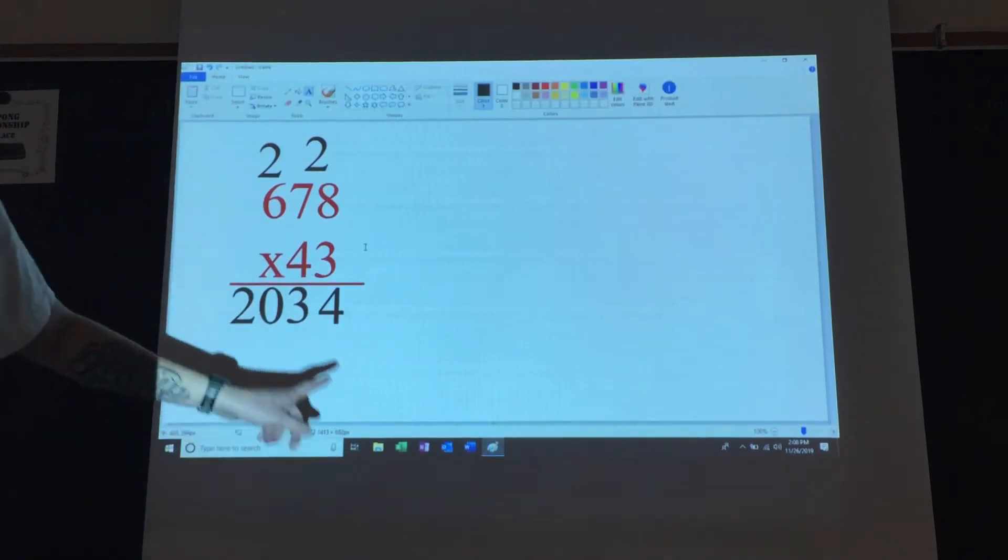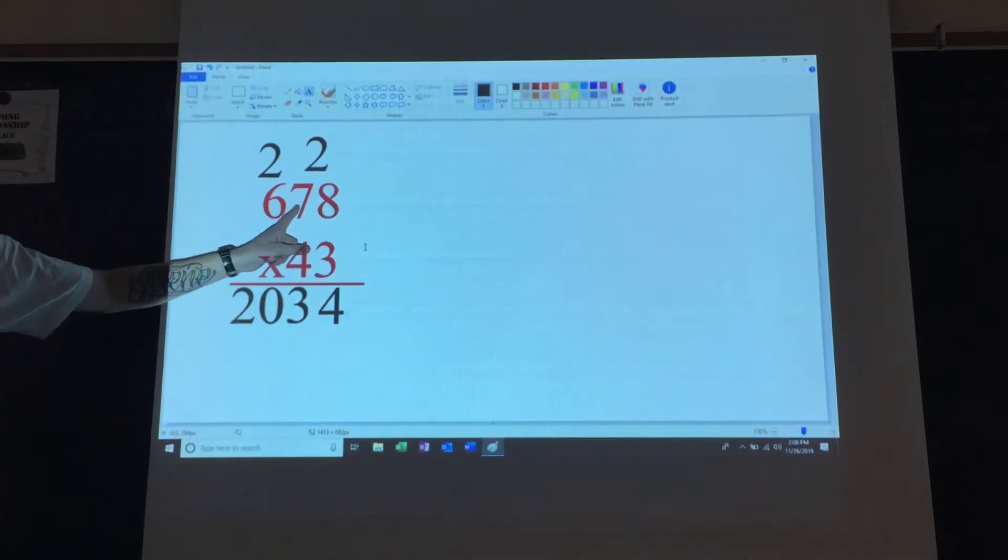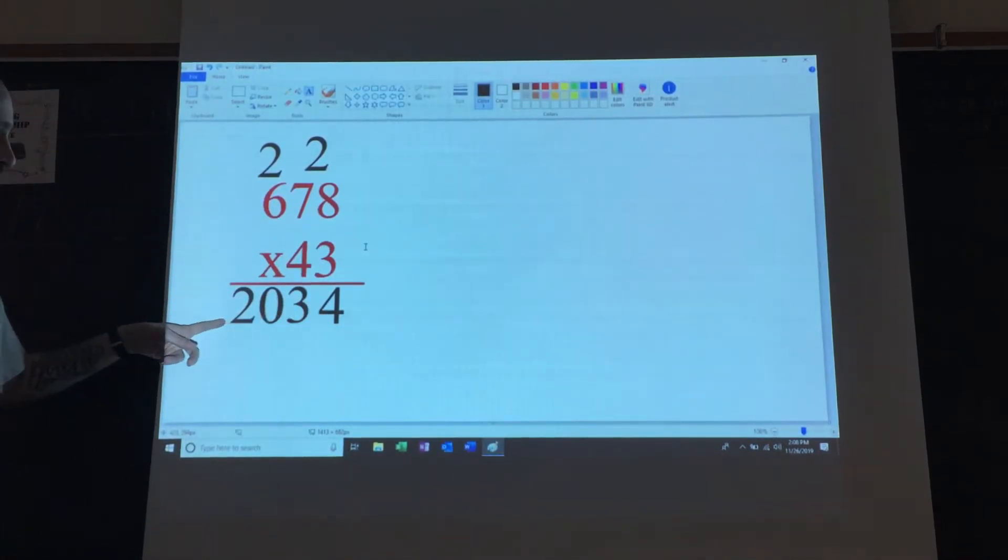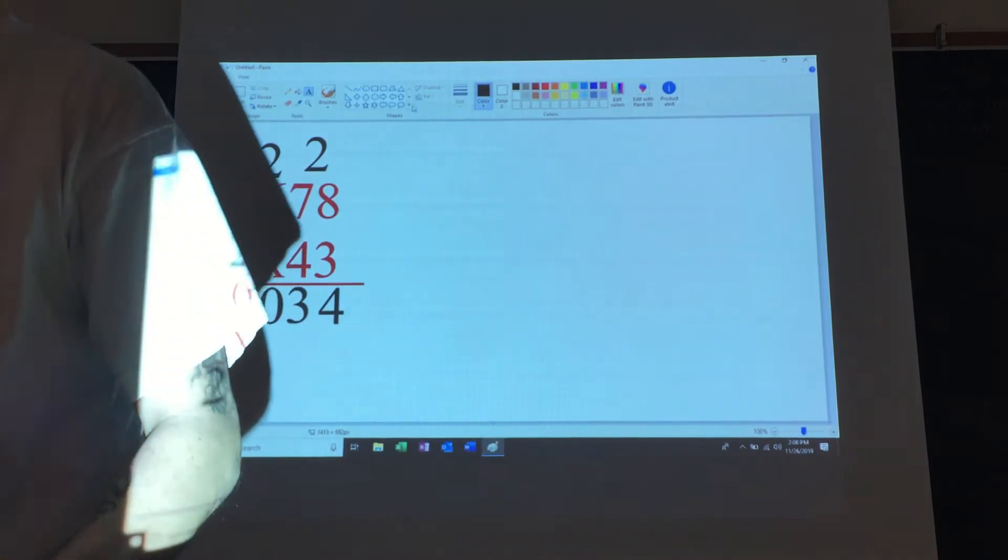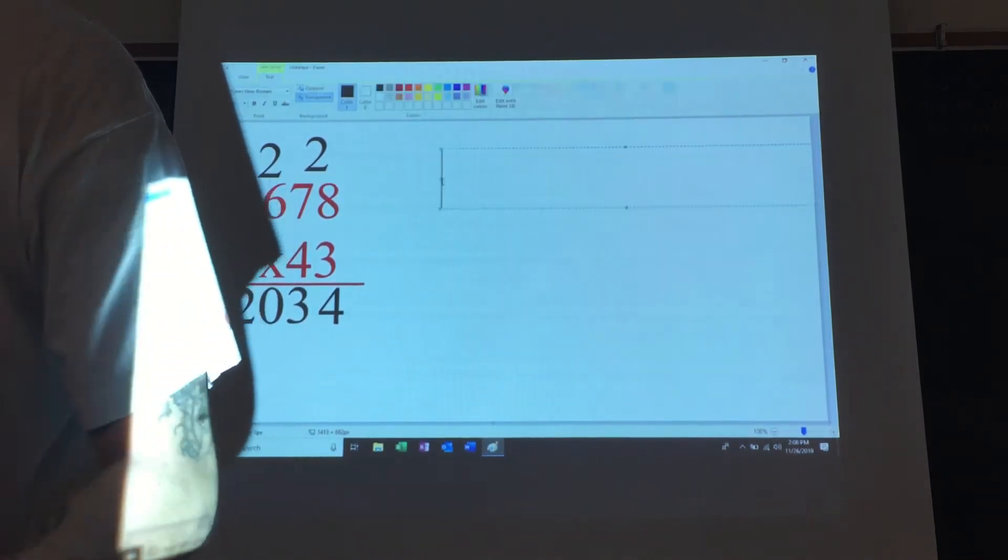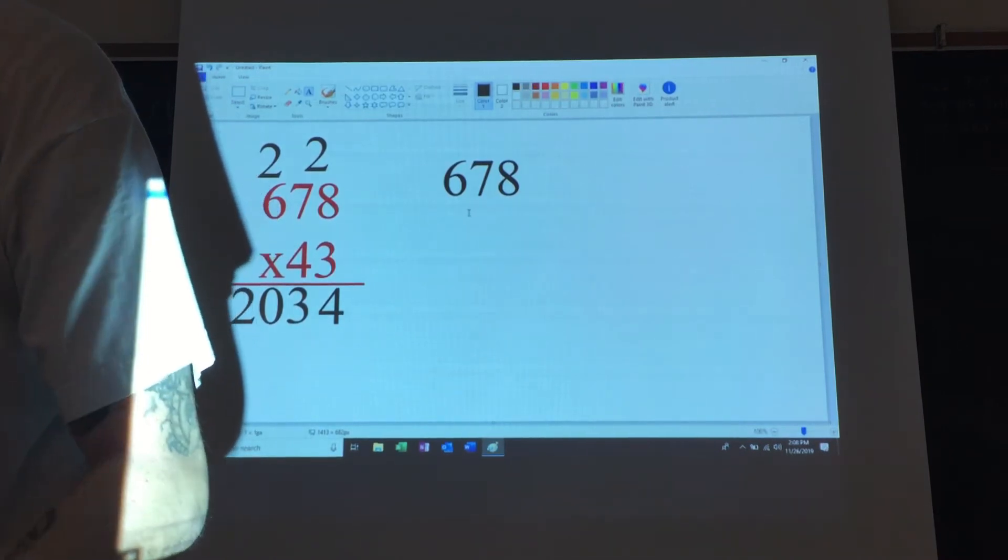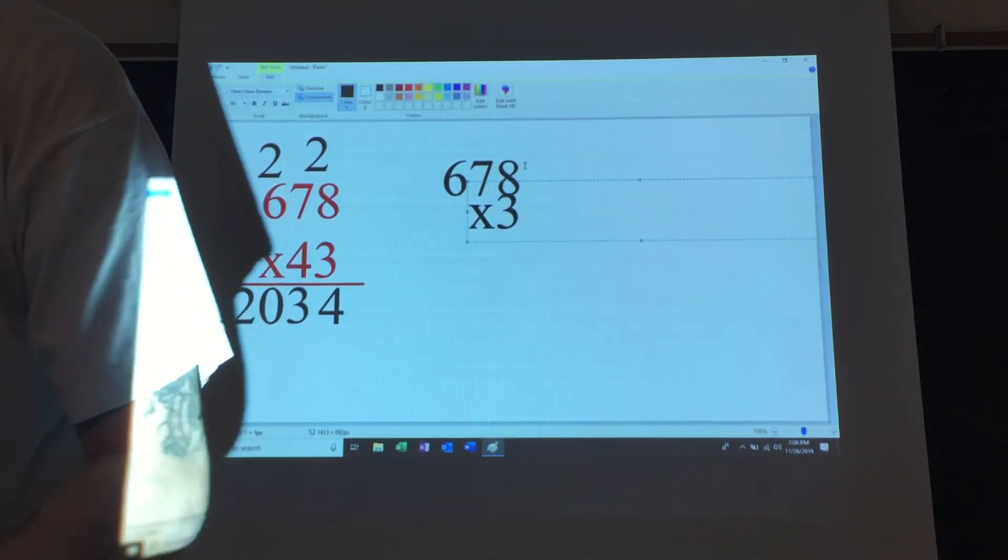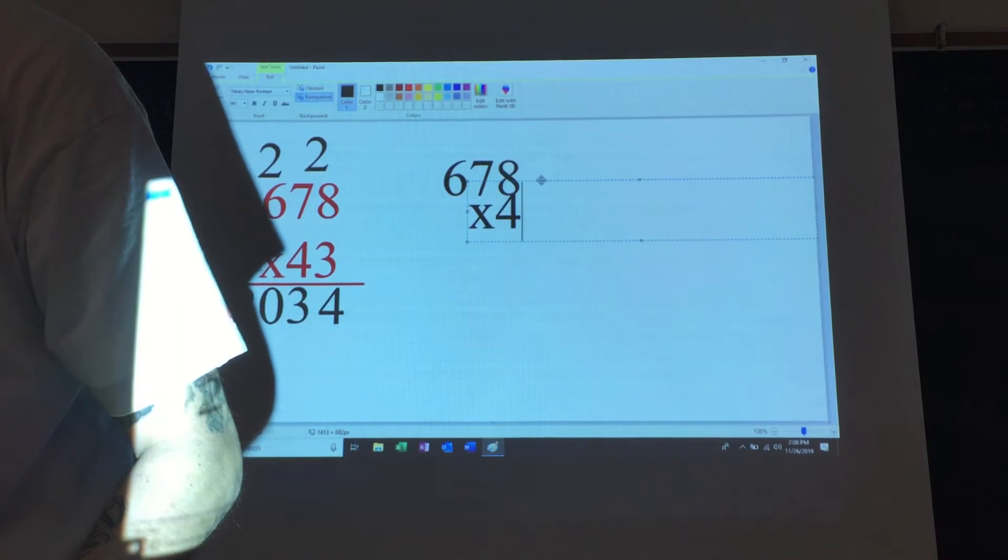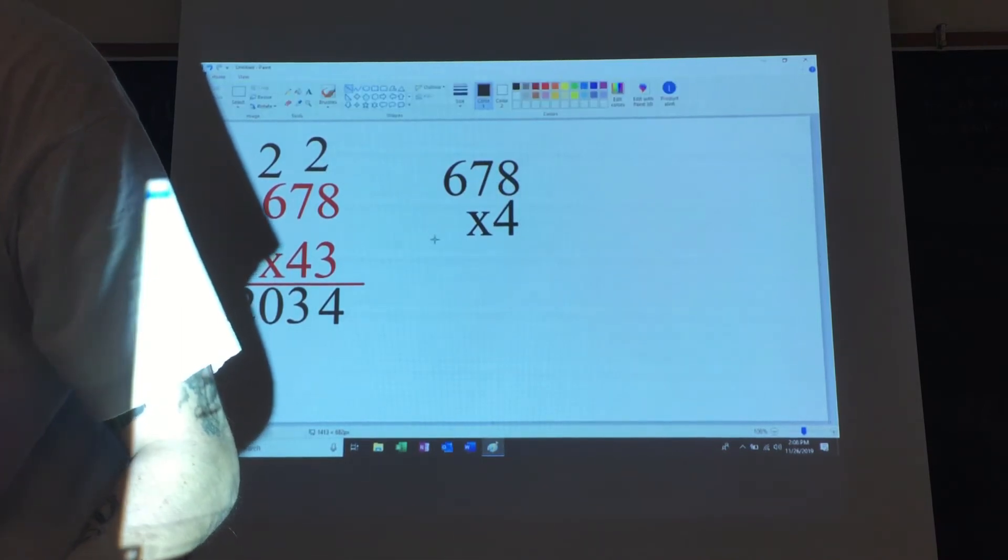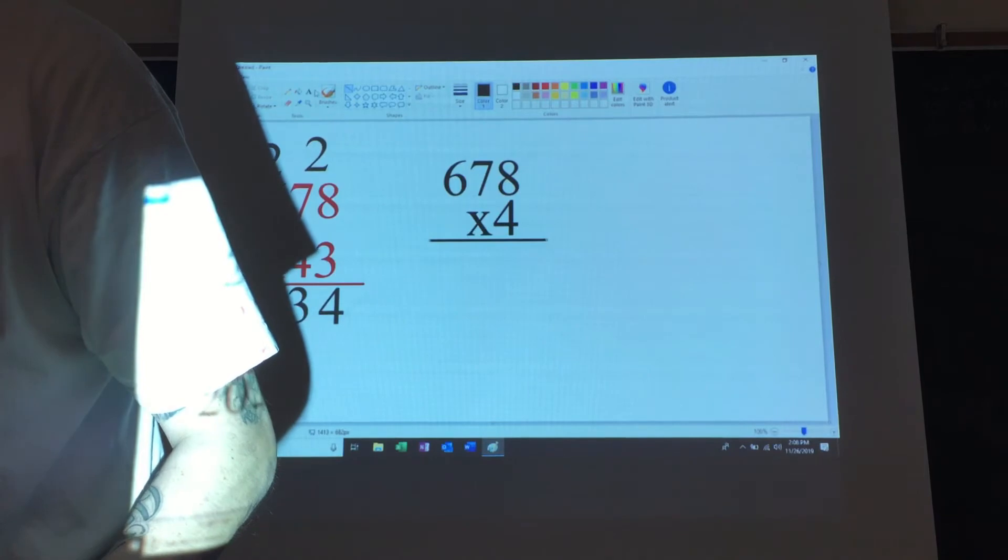So this is the answer right now to 3 times 678. That's done. The next step is to take that 678 and we're going to multiply that by 4 right now. We've already multiplied it by 3, so we're multiplying it by 4.